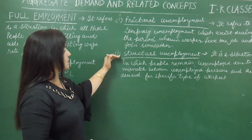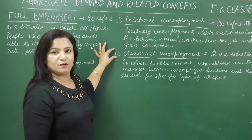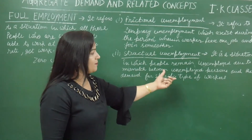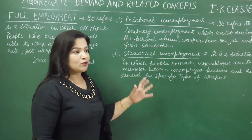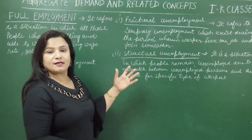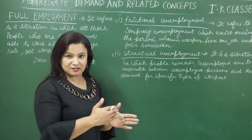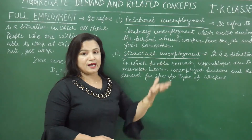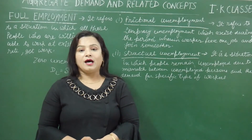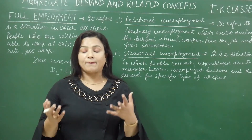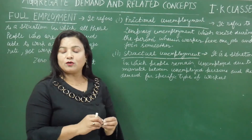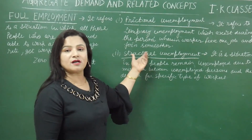Structural unemployment is a situation in which people remain unemployed due to a mismatch between unemployed persons and the demand for a specific type of workers. The company needs a certain type of worker but cannot find them. For example, due to computerization, workers who don't possess enough knowledge of computers will be unemployed until they complete some computer course or training. For that period, it is called structural unemployment.